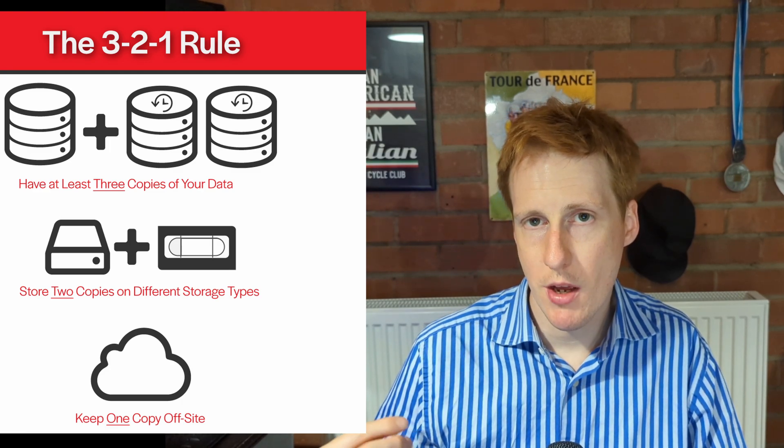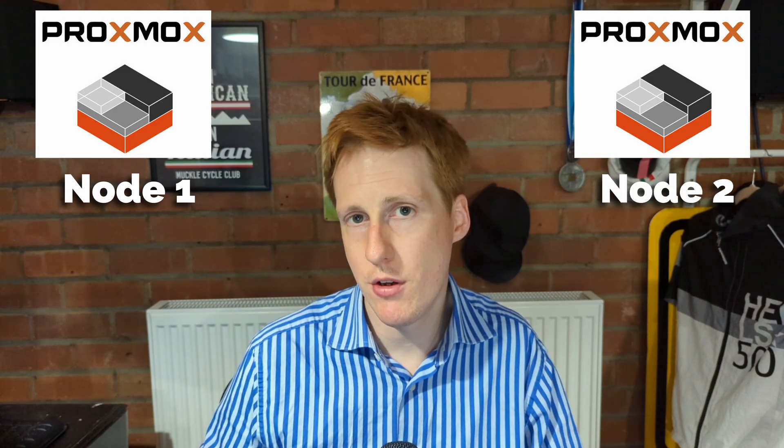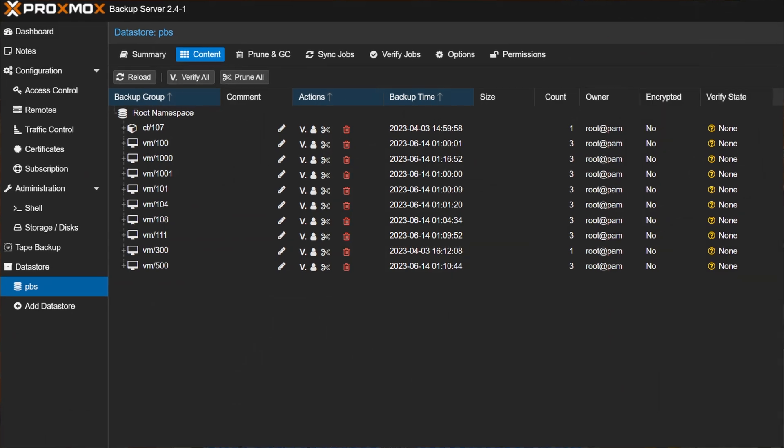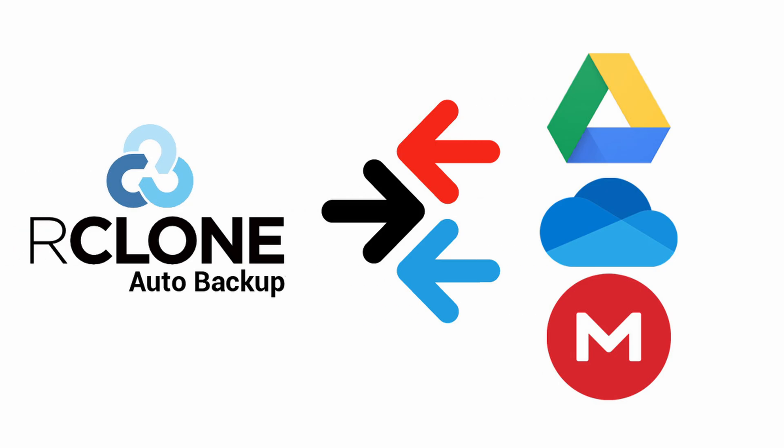I have three copies of my data. I have one on my host and one on another host — so it's replicated across the two. I then have another local backup on my TrueNAS server. And finally I do a third backup in the cloud that uses Rclone to encrypt that and upload it into Google Drive.